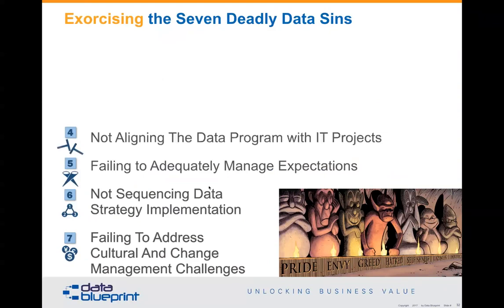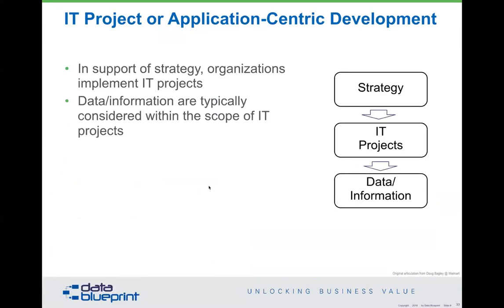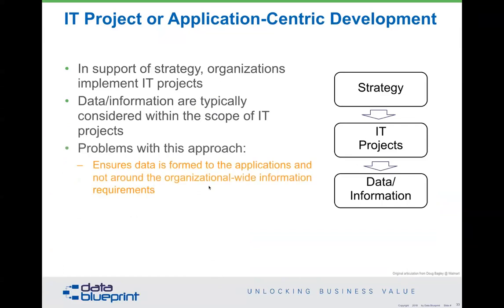Our fourth piece is not aligning data programs with IT projects. We've thought for years that in support of strategy, organizations should be implementing IT projects. The problem with that sequencing is that data and information become an afterthought. It makes sure data is formed around the applications and not around organization-wide requirements, processes are narrowly formed around them, and you get very little data reuse. The fix is something we call data-centric development: your strategy starts first, but then your data and information layer should be specified next.